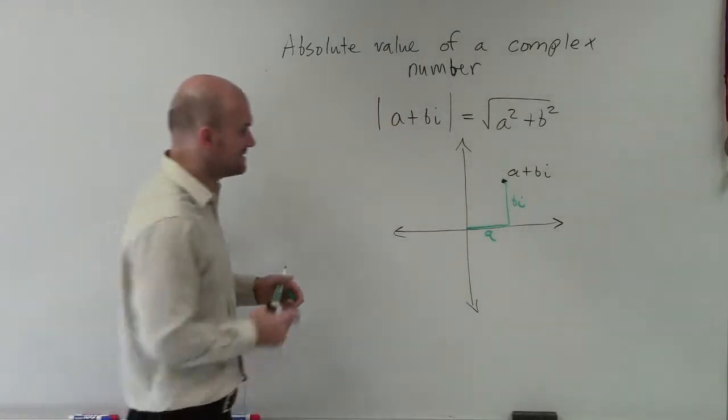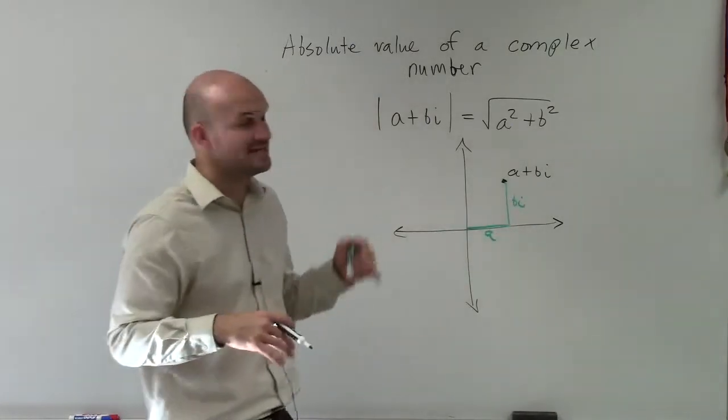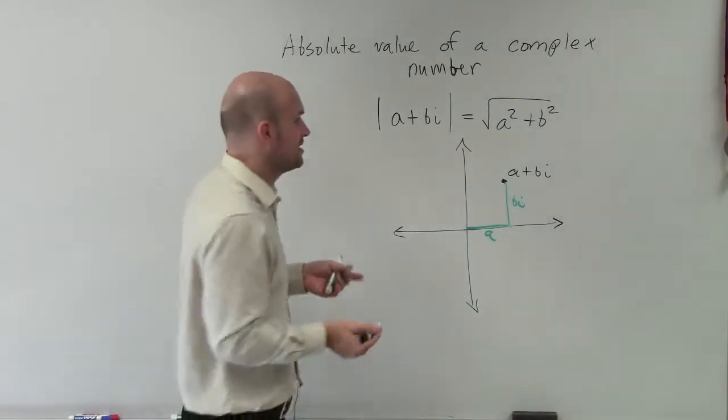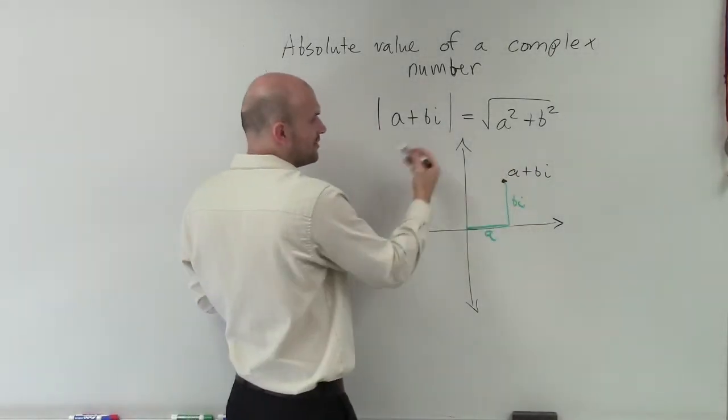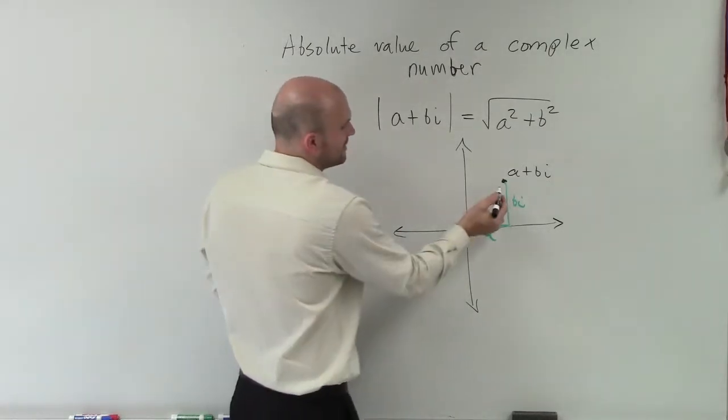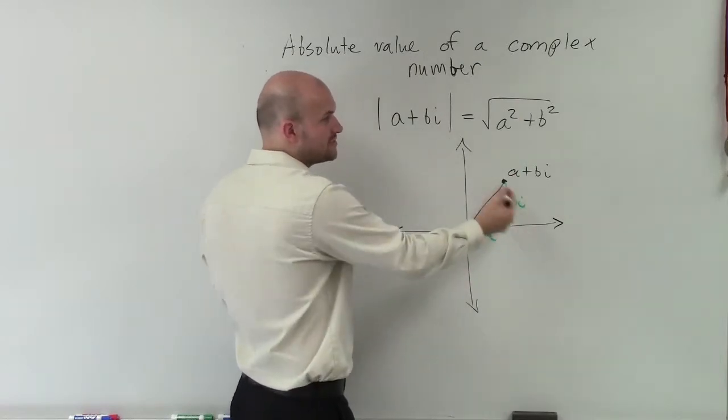So if we wanted to find the absolute value, that's going to be a squared plus b squared. Well, we know that a squared plus b squared, or the square root of a squared plus b squared—that's part of your Pythagorean theorem. So what that's determining is going to be the hypotenuse of this triangle.